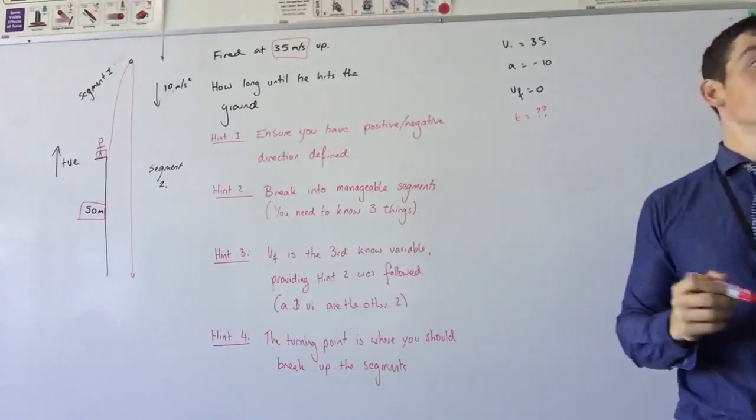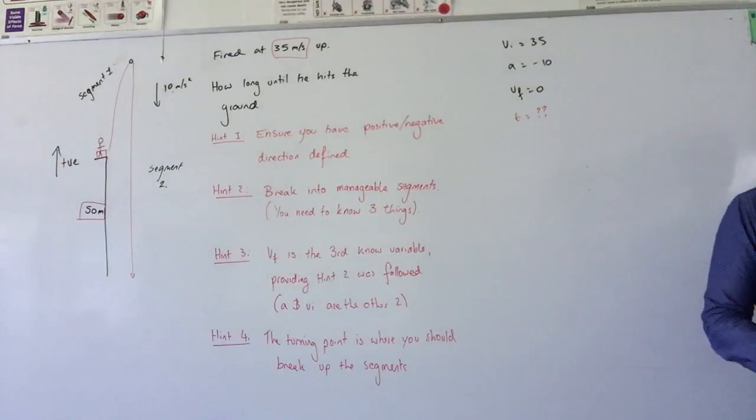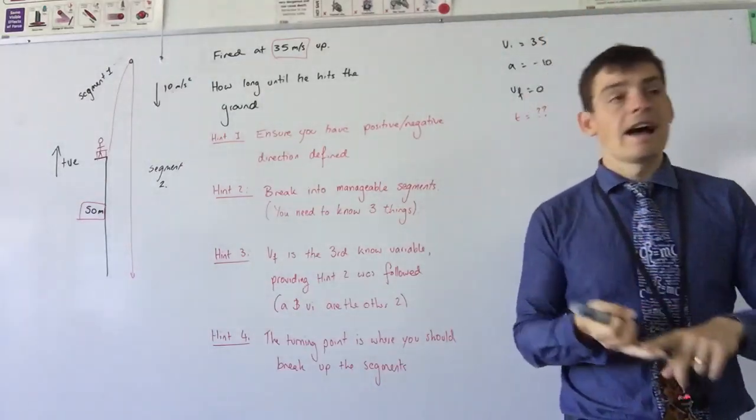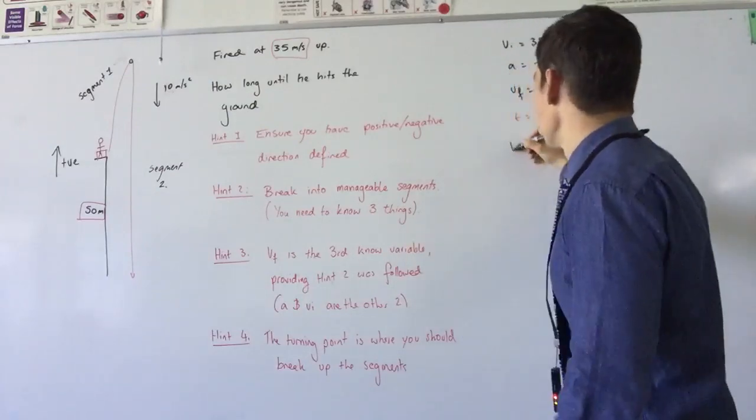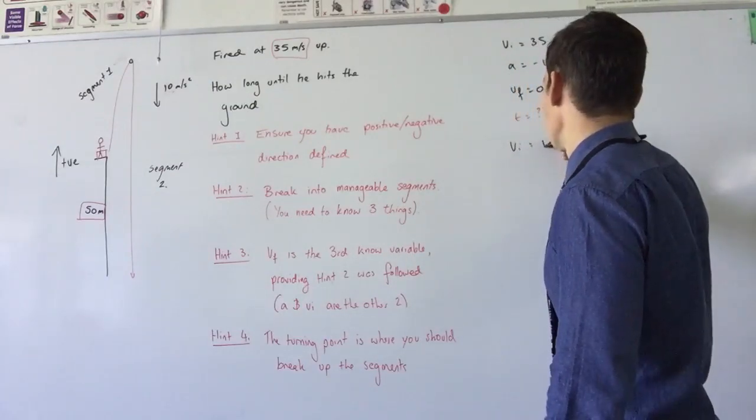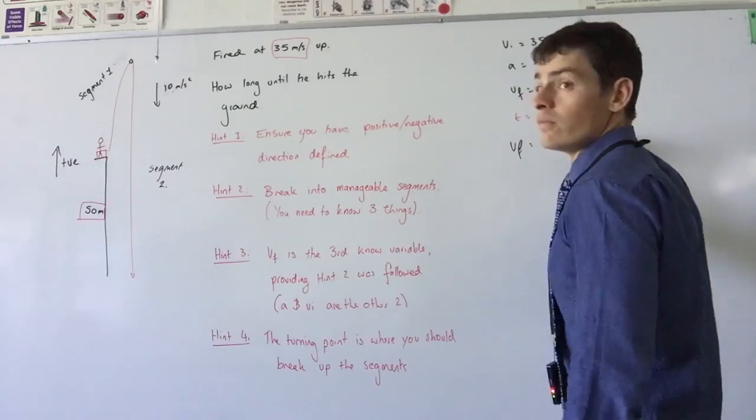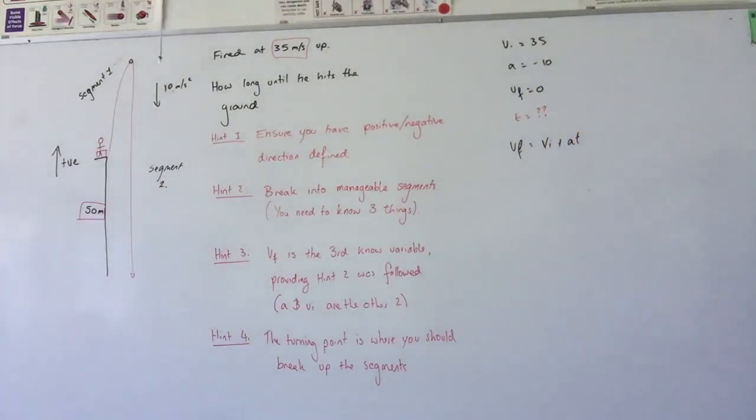What's my next step? Putting it into an equation. I need to find which equation to use. What equation am I trying to use? I need an equation with VI, A, VF, and T. VF is equal to VI plus AT. Very good. I sub my values in.